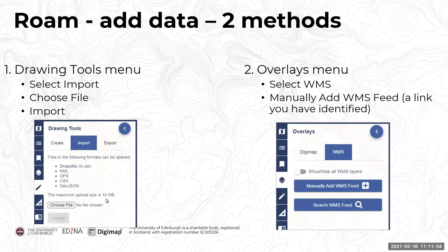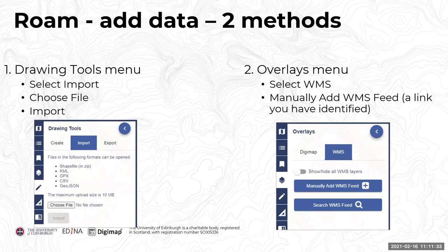Emma notes that for users with a GPS watch, the GPX import is really useful — she's tested it by importing walk tracks. However, on a very long walk with many GPS points, the file can struggle to upload not because of file size but due to the sheer number of points. The second option for adding data is within the overlays menu, where you can add a web map service — either by manually adding a WMS URL you've already identified, or by searching WMS feeds that Digimap has available.